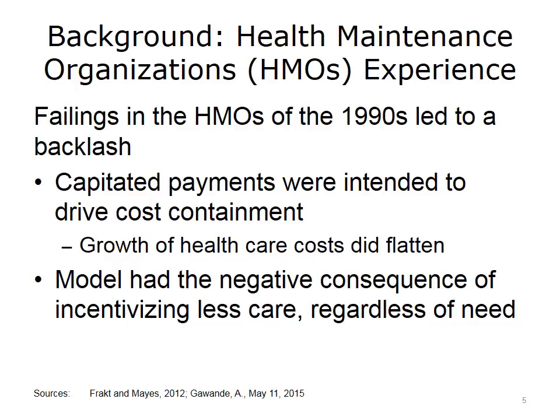An HMO's profit or loss depended on whether it could deliver those services at a cost that was less than the capitated payments it received. This meant the HMO had a strong incentive to squeeze costs. The HMOs tried to control costs by negotiating low rates from providers and by restricting their members' use of services. For many providers, the negotiated rate was lower than the cost of providing care, so those providers lost money. For members, costs generally were good, but services suffered.